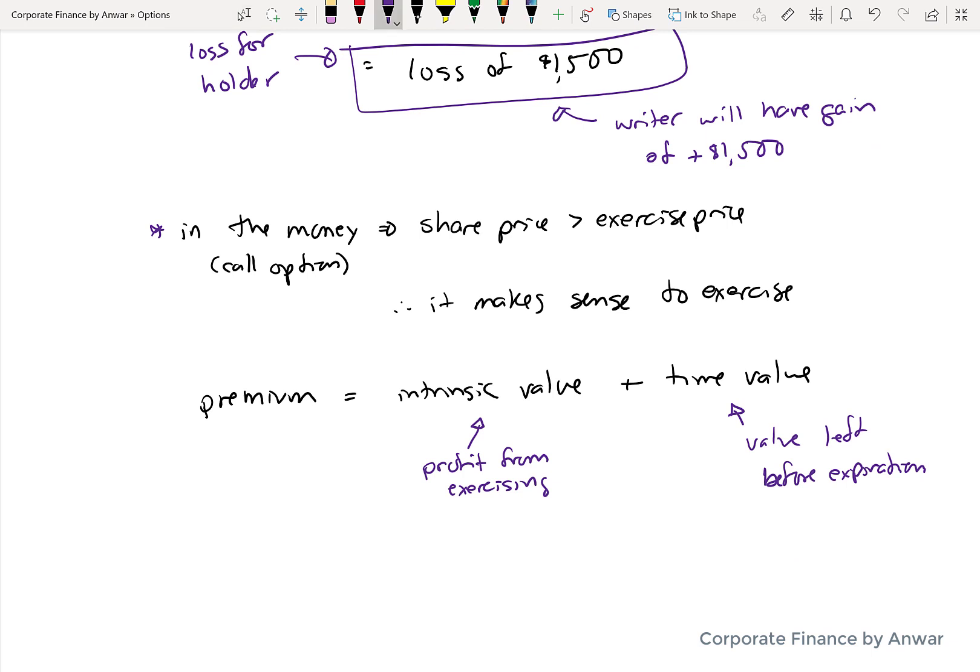So in our example we were told that $65 was the premium, and the intrinsic value I can calculate is going to be $1,500, which is what the shares are trading at, minus $1,450, which is what you're going to be exercising from, which is equal to $50. So therefore the time value in this case is $15.